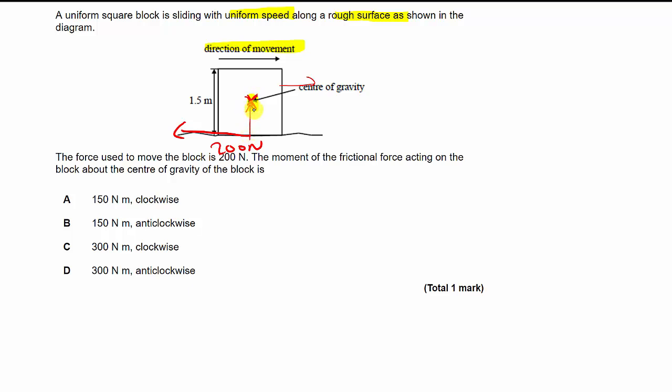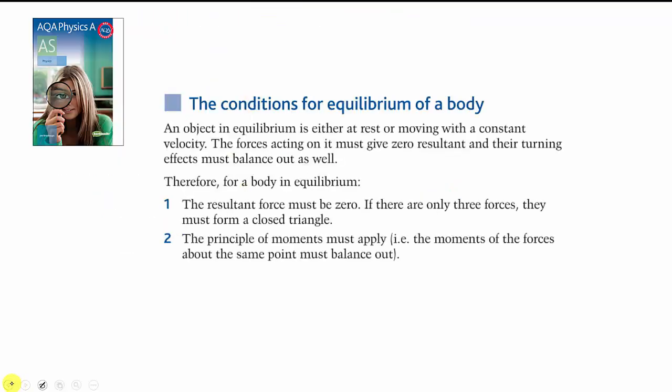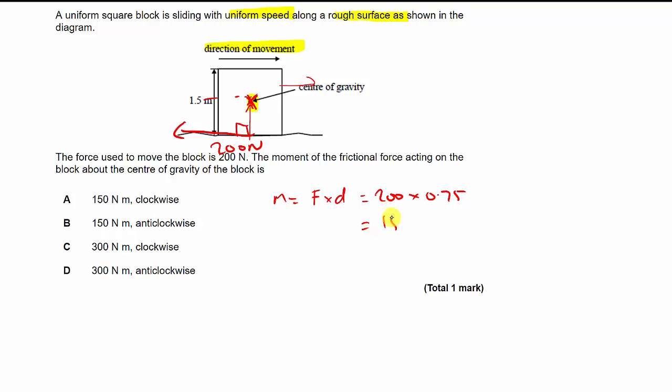Moments is force times perpendicular distance. Well, the distance from there to there, and this is perpendicular at a right angle, is half of 0.5. So moment equals force times distance. Force is 200 times 0.75, because it's half of that, gives us 150 Newton meters. But in what direction? Clockwise or anticlockwise? Well, if you took this force and just consider it on its own, it would be making the block turn around this way. So that is clockwise. So we're going to go for A.